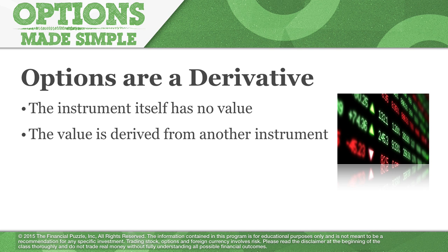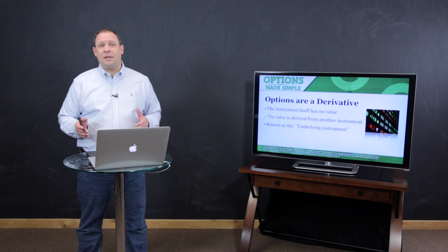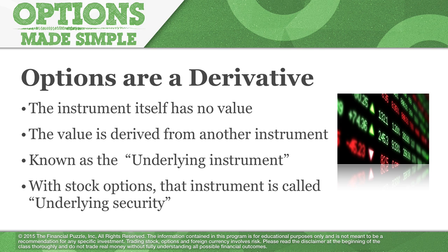That other instrument is called the underlying instrument. Again, if it's the stock you're looking at, it's called the underlying stock. If it's a currency pair, that would be the underlying instrument. If it's a futures contract, that would be the underlying instrument. Whatever the option is that you have the option on, the instrument that affects that is called the underlying instrument. Now with stock options, that instrument is called the underlying security. If you're dealing with Forex options, it'd be the underlying currency. But underlying security is the technical term that we use.